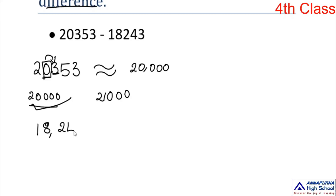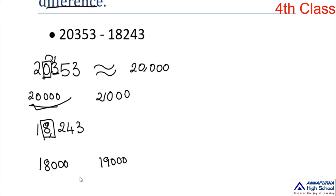Second number: 18,243. 8 is in thousands place. So 18,243 lies between 18,000 and 19,000. The right-next digit is 2, which belongs to the small number family. So 18,243 is nearest to 18,000.